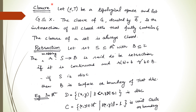First is the closure. Let X be a topological space and G be any subset of X. Then the closure of G, denoted by G-bar, is the intersection of all the closed sets which fully contain G. Or equivalently, the closure of G is G union with all of its accumulation points.